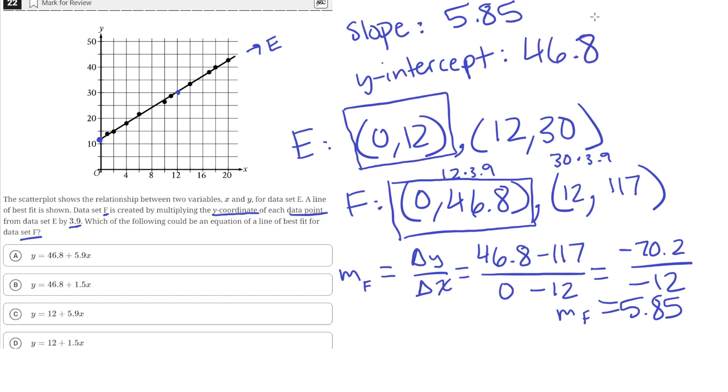So, now with these two pieces of information, we can write our equation for line F in Y equals MX plus B format, where M is the slope and B is the Y intercept. So, the equation is just 5.85X plus 46.8.